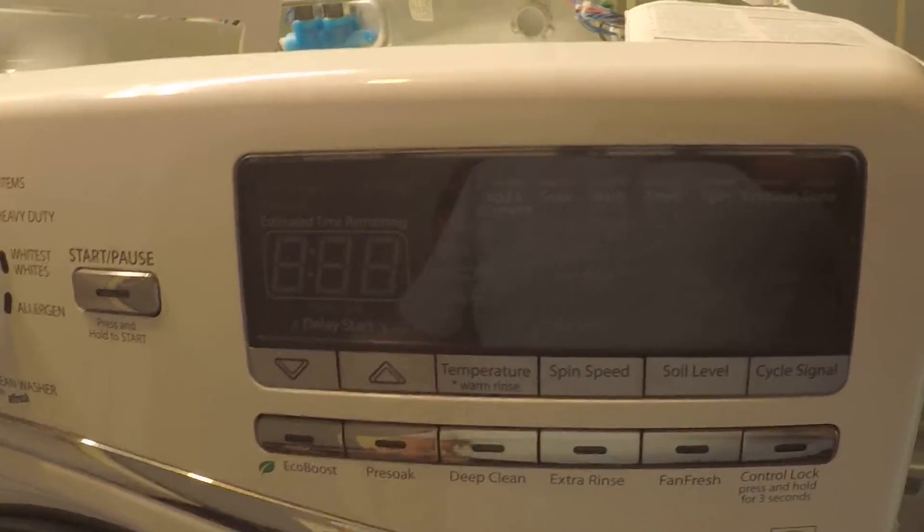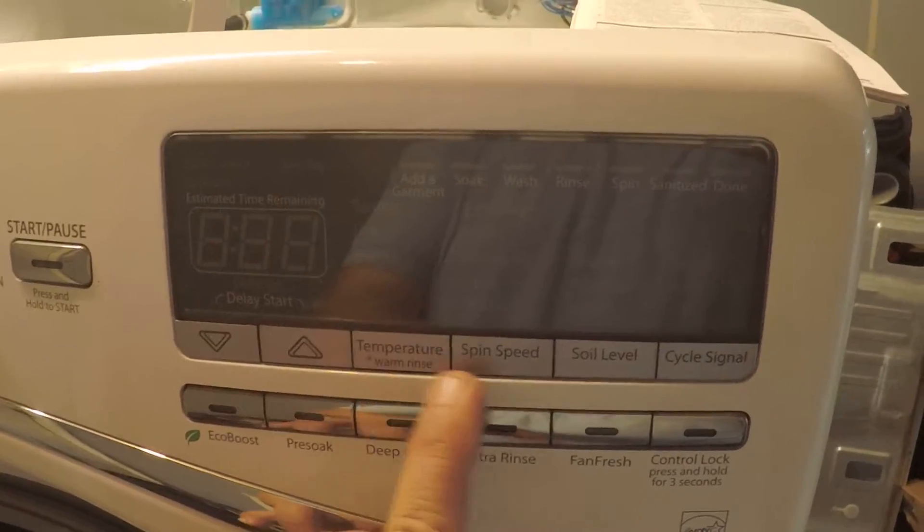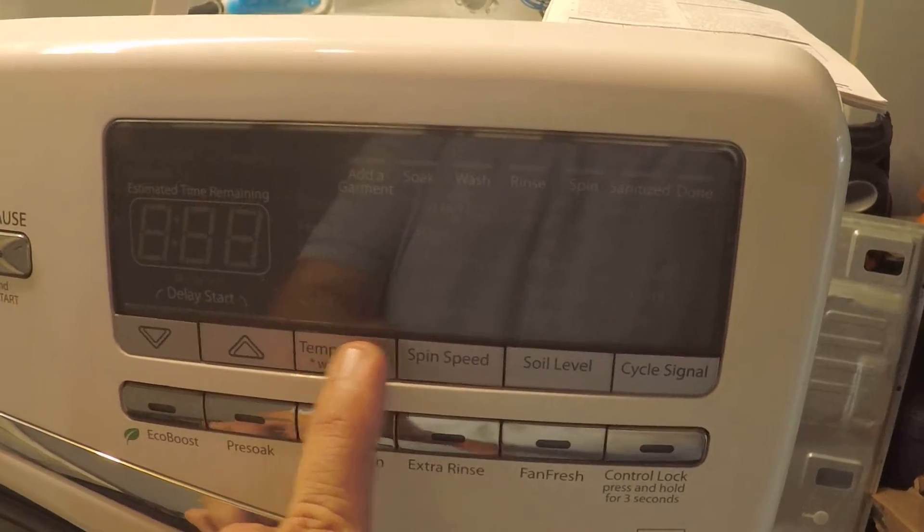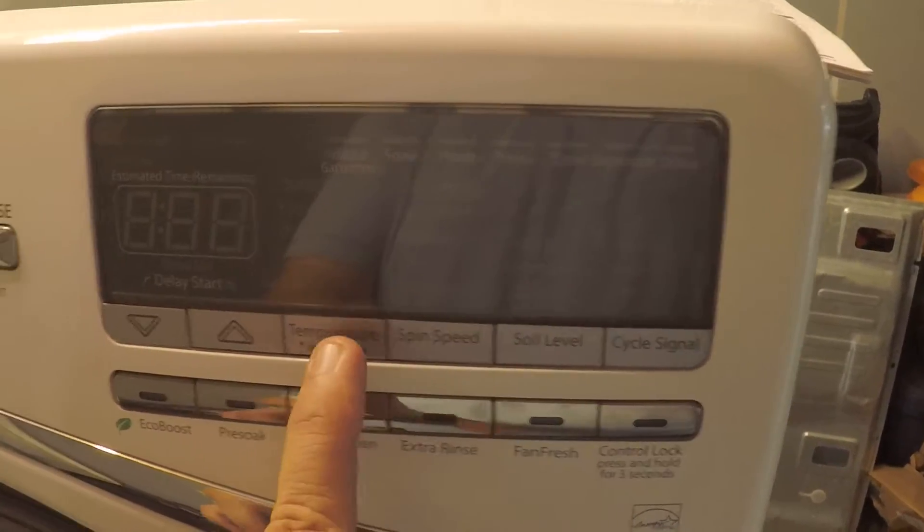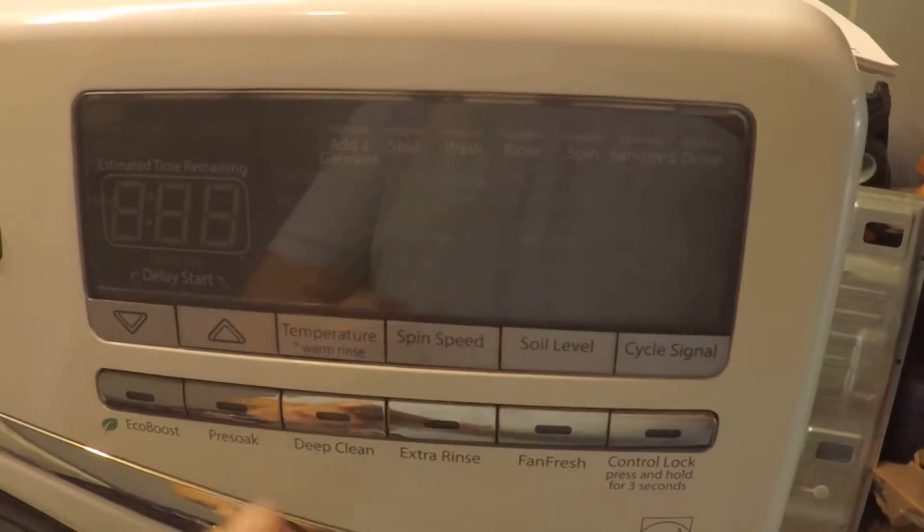You want to make sure that it's blank there, and what you're going to do is hit these three buttons: temperature, spin speed, and soil level in a series three times. It could be any order but we're going to stick with one order and repeat that order three times. So here it goes, and this has to be done within eight seconds.